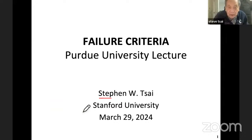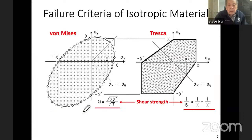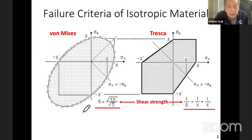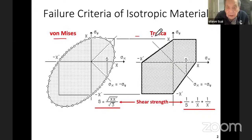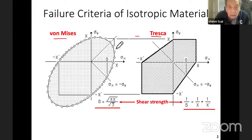So let's talk about failure criteria. This is the failure criteria for isotropic materials. As you can see, the von Mises is on the left and the Tresca on the right. And this is the traditional isotropic materials.